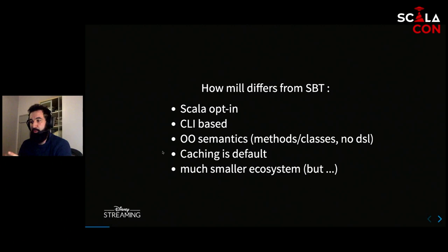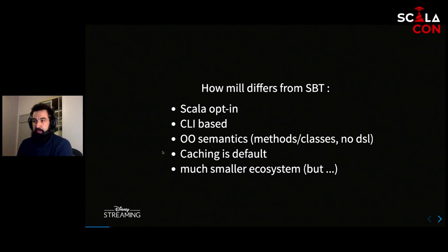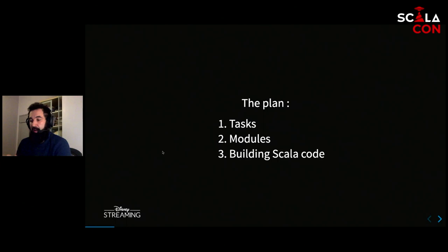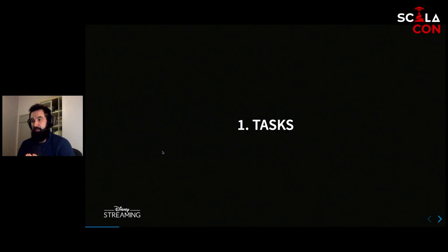Mill is CLI-based, so you manipulate your build using command lines from the terminal. It builds off the object-oriented semantics of the Scala language, as opposed to providing a DSL to define your build. It has caching by default. It's important to point out that the ecosystem of Mill is much smaller than SBT's. The plan of this talk is to cover the building blocks Mill offers out of the box — tasks, modules — and then how those are used to build Scala code.